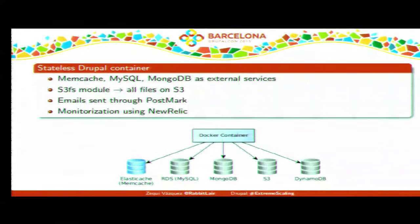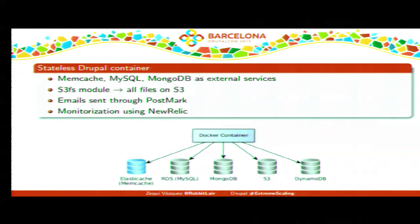Now one step down — the container itself. Remember, we have Drupal running on Nginx and PHP-FPM, and we want these tools inside a Docker container. We needed a stateless Drupal container — no mutable data inside. We want to be able to kill and restart a container without losing any data. In practice, Memcache, MySQL, and MongoDB must be external services, and user-uploaded files must live outside the container. We used Amazon S3 for file storage, and the S3FS Drupal module. Emails were sent via Postmark, and we used New Relic for monitoring on each container.